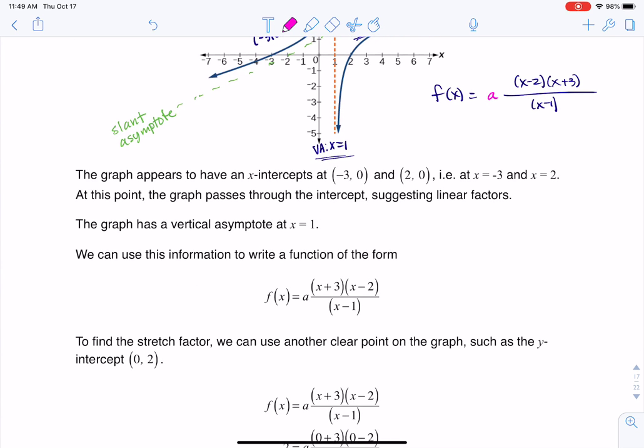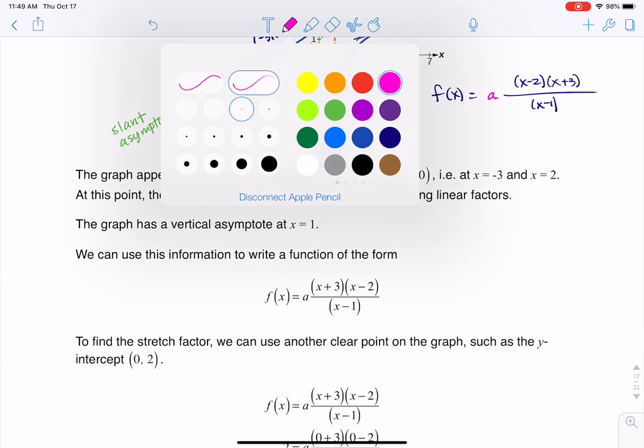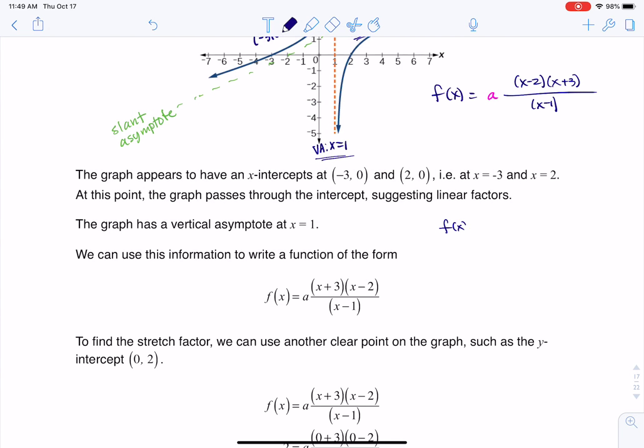So let's try this here. I'm going to rewrite my original function down here. So f(x) will equal a(x - 2)(x + 3) over (x - 1). Keep in mind I'm going to be plugging in (0,2).